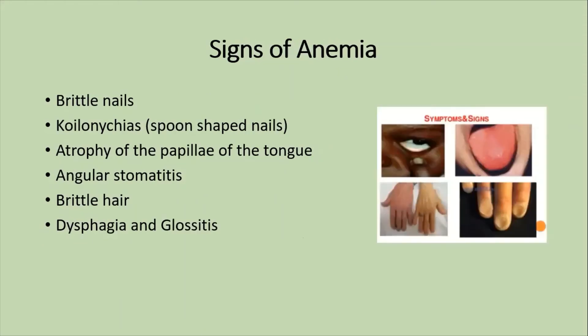Signs of anemia include brittle nails, spoon-shaped (koilonychia) nails, atrophy of the papillae of the tongue, angular stomatitis, brittle hair, dysphagia, and glossitis.